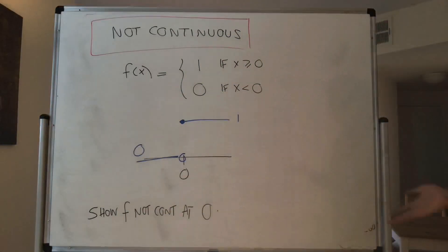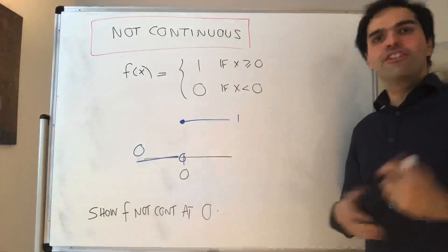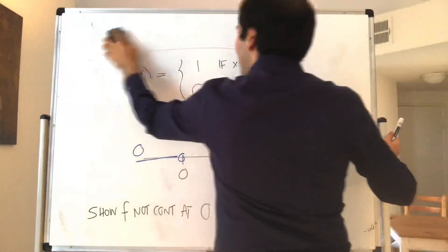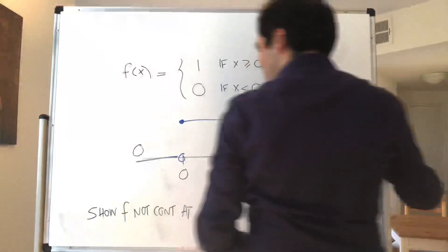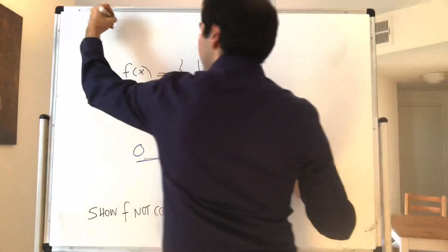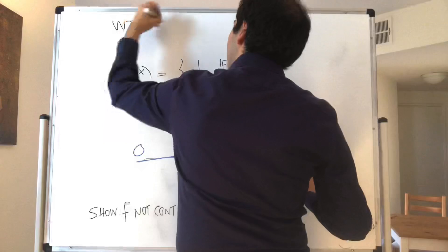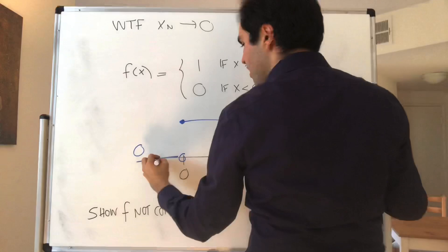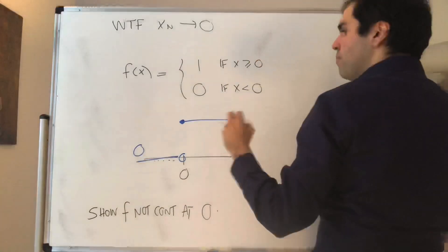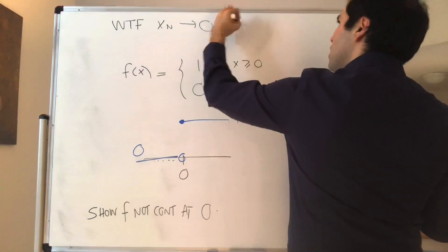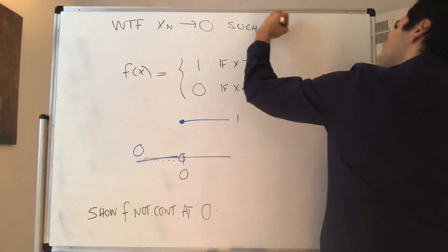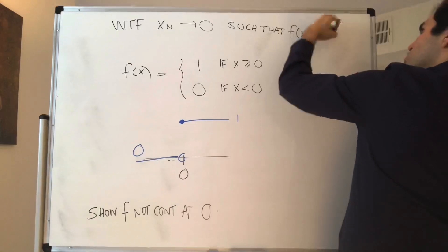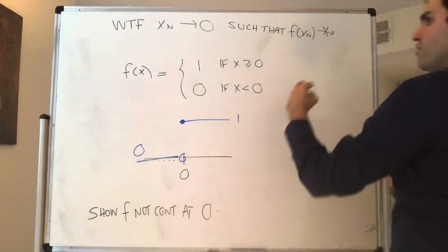And let's do it both ways, one using the sequential definition and the other one using the epsilon-delta definition. Well with the sequential definition all it means you need to find xn converging to 0, so some sequence that converges to 0 but such that f of xn does not converge to f of 0 which is 1.